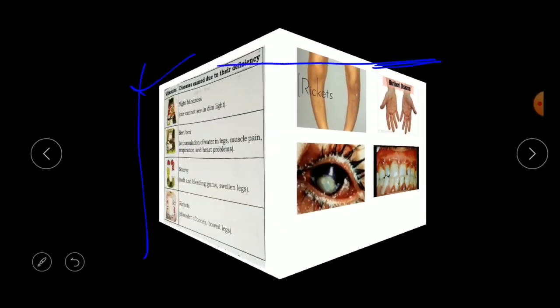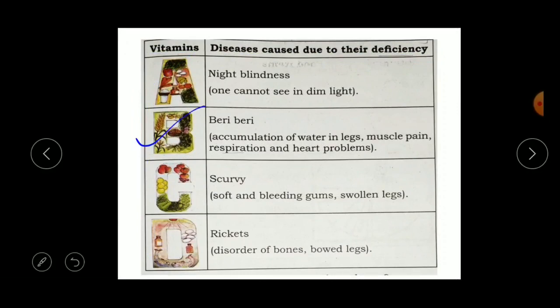The disease caused by deficiency of Vitamin B is called beriberi. Symptoms include accumulation of water in the legs, muscle pain, breathing difficulties, and heart problems. The disease caused by deficiency of Vitamin C is scurvy, with symptoms of soft and bleeding gums and swollen legs.